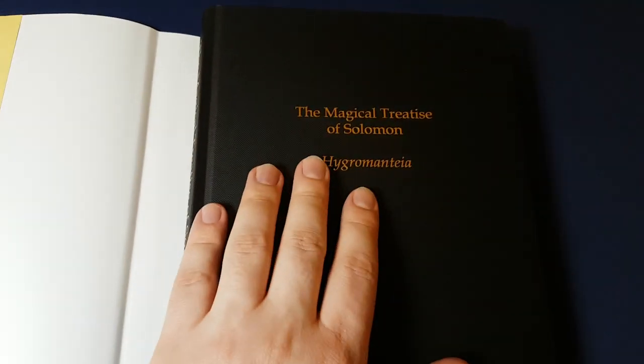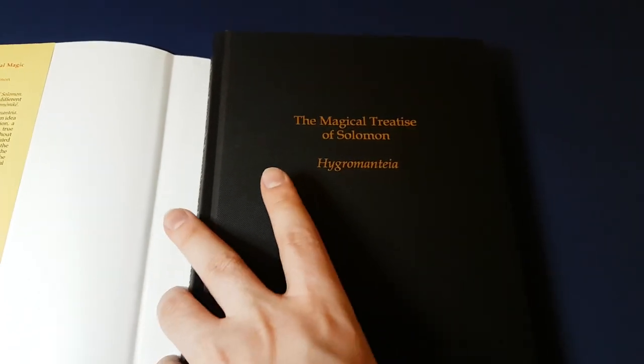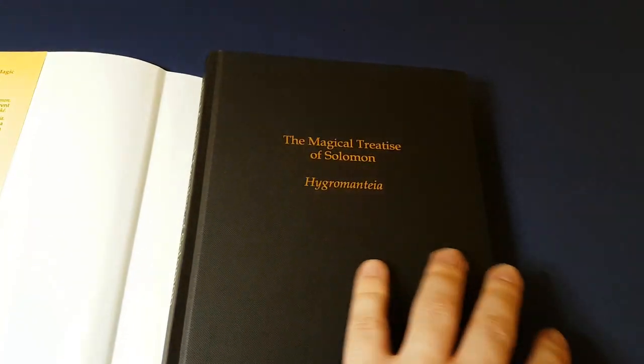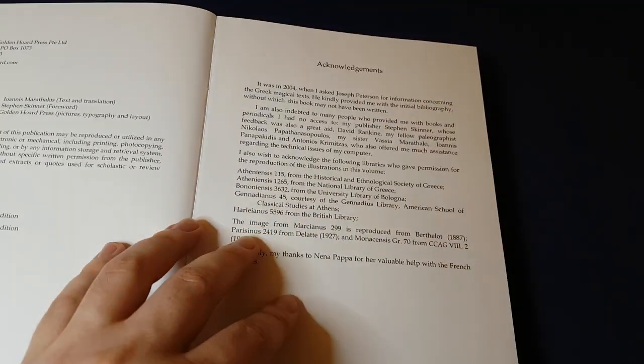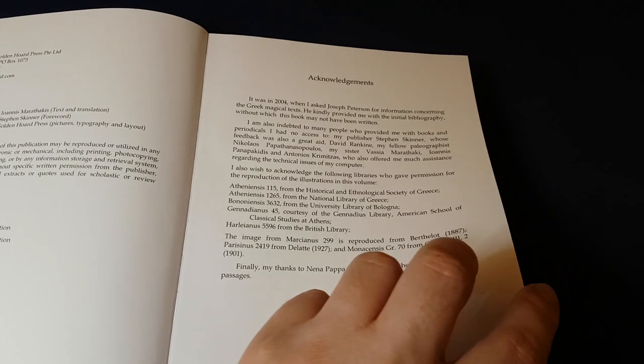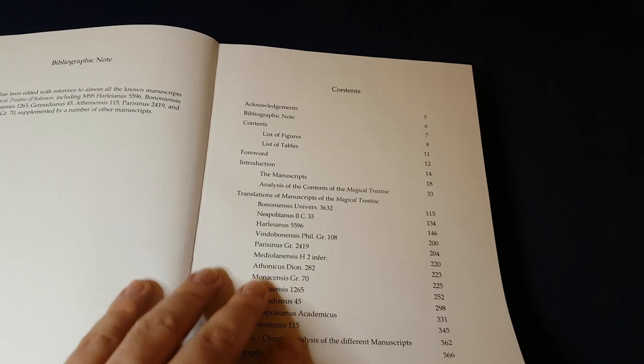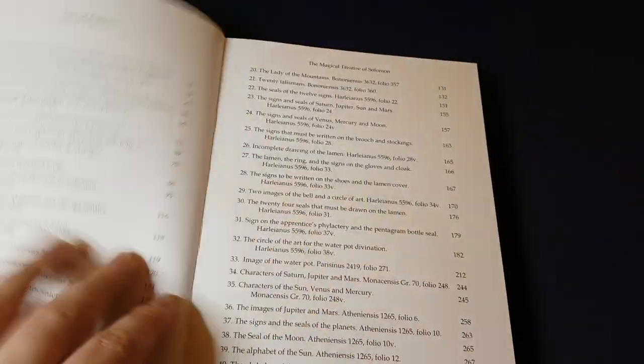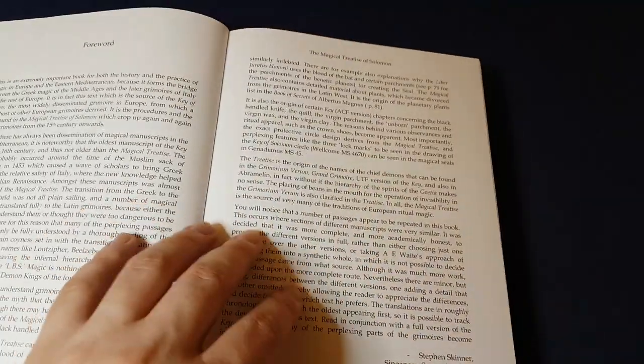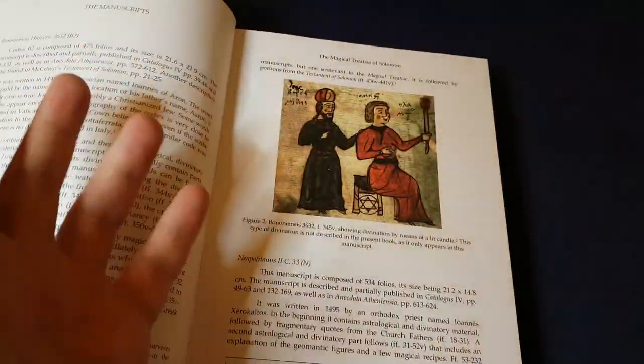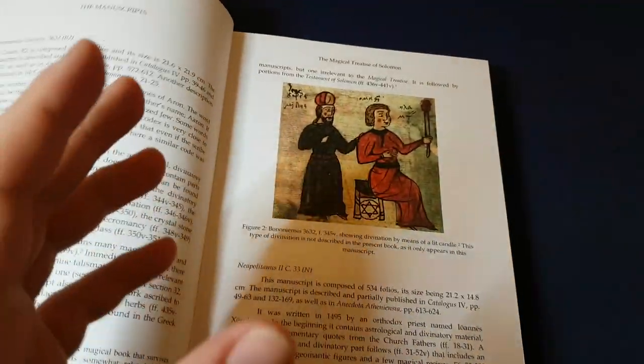The Hygromantia, it's about 15 different copies that are currently known, all obviously containing slight variances, and Ioannis Marathakis has been through all of them and presented his findings on what they say in this volume.